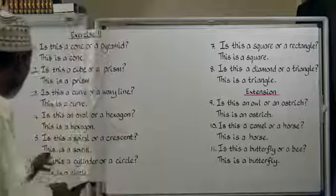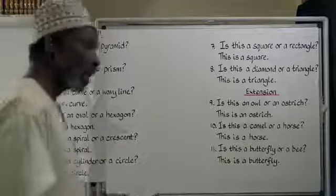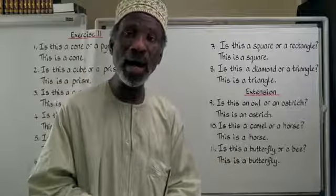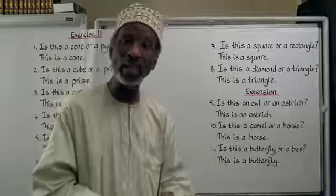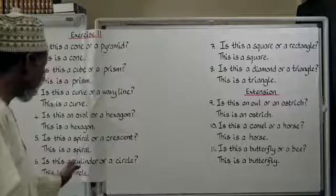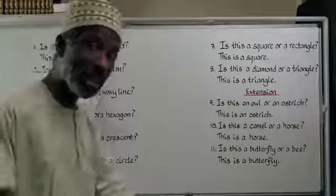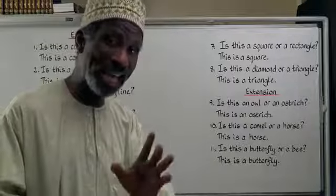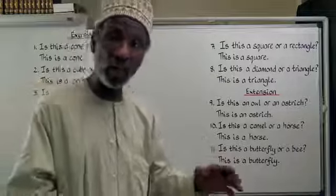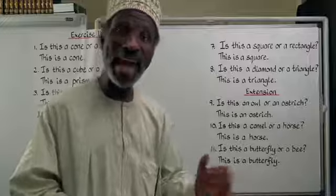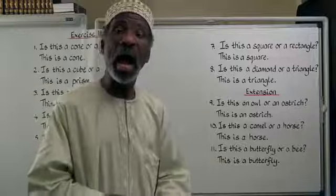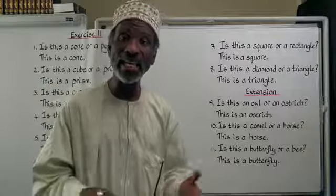Number 6: is this a cylinder or a circle? A cylinder is أُسْطُوَانَةٌ and circle is دَائِرَةٌ. أُسْطُوَانَةٌ is feminine, so: هَلْ هَذِهِ أُسْطُوَانَةٌ أَمْ دَائِرَةٌ. This is a circle — هَذِهِ دَائِرَةٌ.